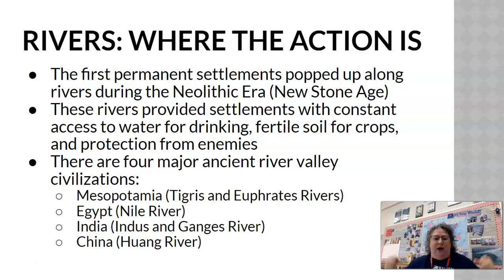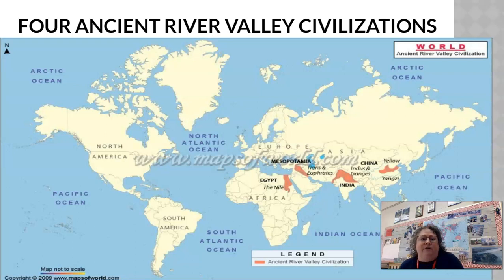The major four ancient river valley civilizations are: Mesopotamia along the Tigris and Euphrates rivers; Egypt on the Nile River; India along the Ganges River originally and then the Indus later on; and then China along the Huang He river.